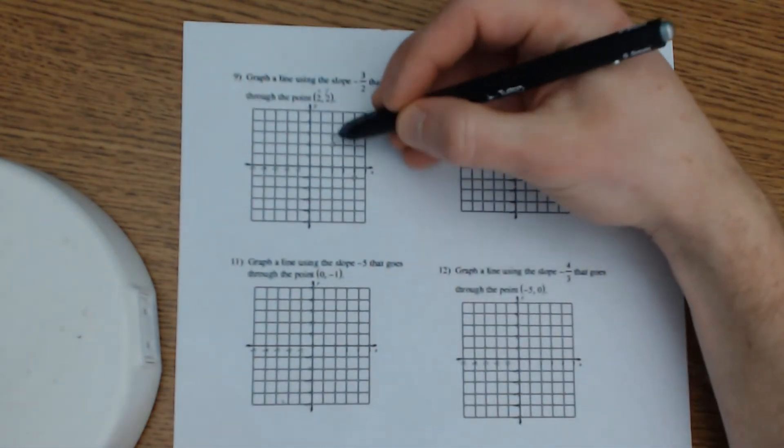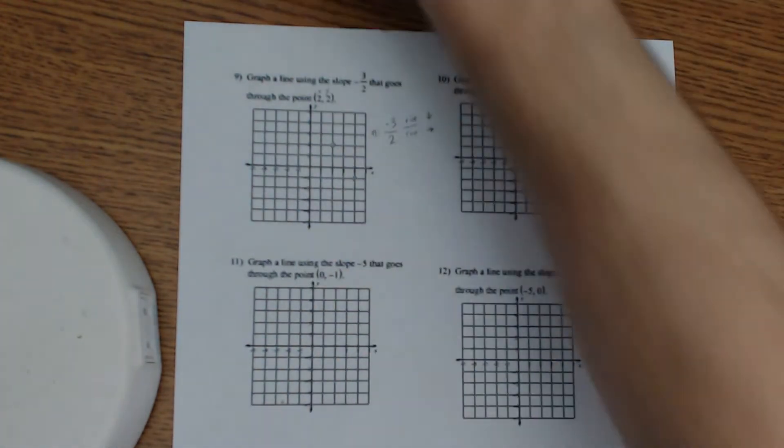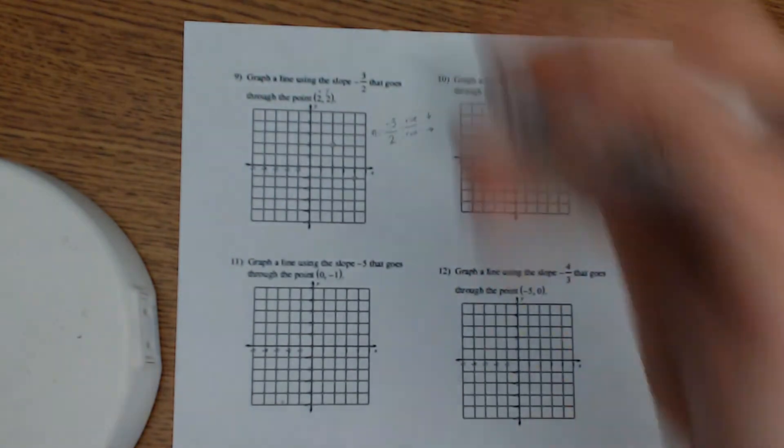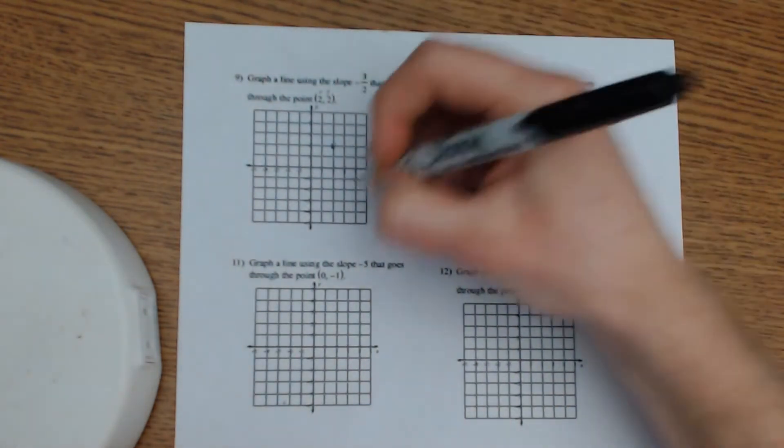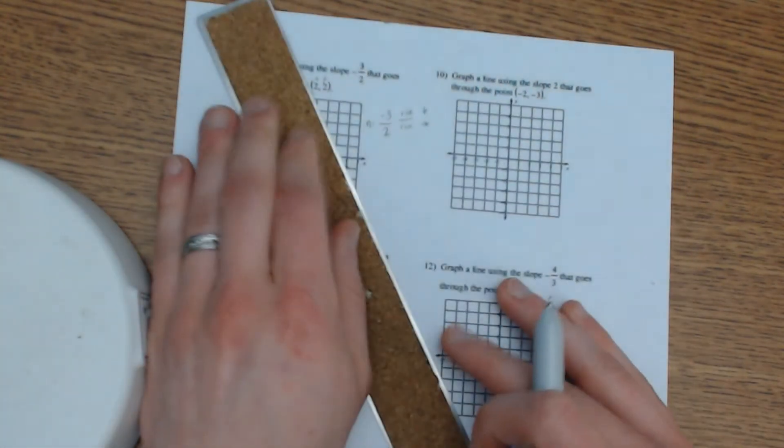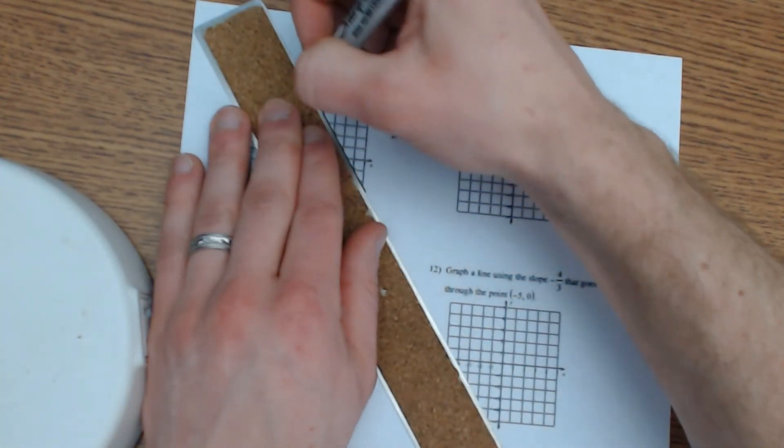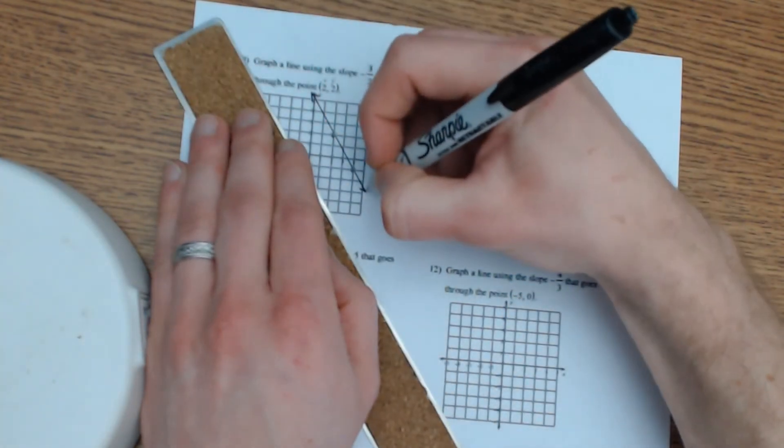All right, so now I have two points. Two points is really all you need in order to graph a line. I'm going to make this a little darker because it's kind of hard to see. I think that's a little better. And now we're going to go ahead and connect that with a line. We like to make our line go all the way through.